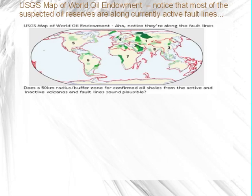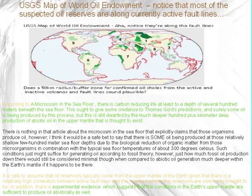The USGS map of world oil endowment shows that most suspected oil reserves are along currently active fault lines. According to a microcosm in the seafloor, there is carbon-reducing life at least to a depth of several hundred metres beneath the seafloor. This ought to give some credence to Thomas Gold's predictions, and surely some oil is being produced by this process — though it is dwarfed by the much deeper 100-plus-kilometre deep production of abiotic oil in the upper mantle.